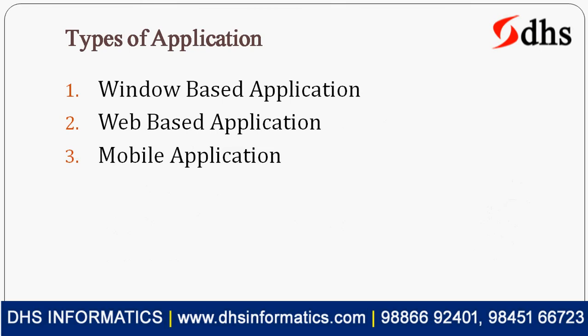At present, we are widely using three types of applications: window-based applications, web-based applications, and mobile applications. Window-based applications means, for example, Word, Excel, PowerPoint, or billing applications in a supermarket. That means we have to install that software on each and every system — laptop or desktop. Those are called window-based applications. Usually, window-based applications are two-tier or one-tier, also called client-server architecture.